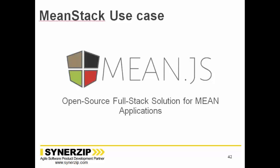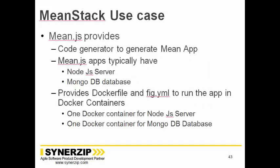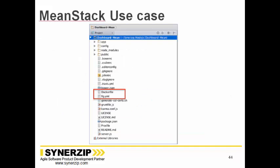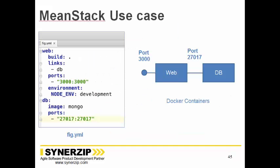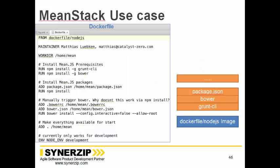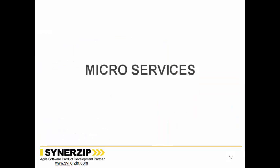The MEAN stack use case: MEAN stack is a framework generating code with a Node.js server and MongoDB database. It provides Docker files to launch one container for Node.js and one for MongoDB. The fig file defines how the two containers are linked — web linked to DB, web container on port 3000, MongoDB on port 27017. The web container is built from a local Docker file.